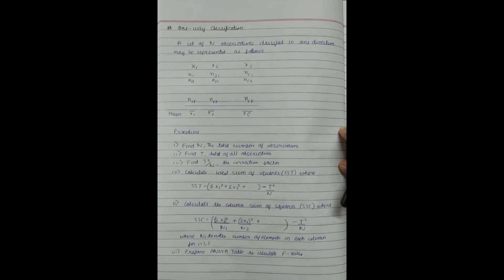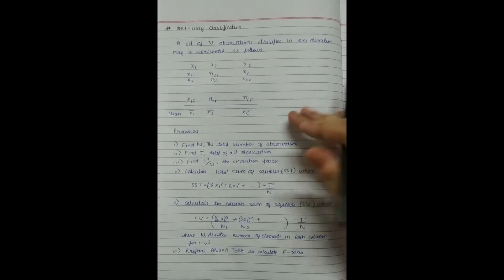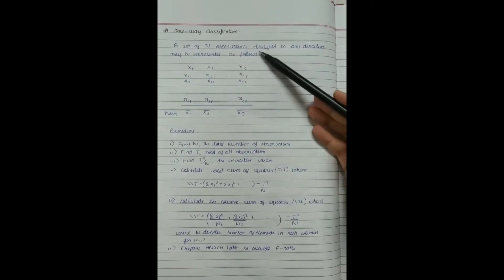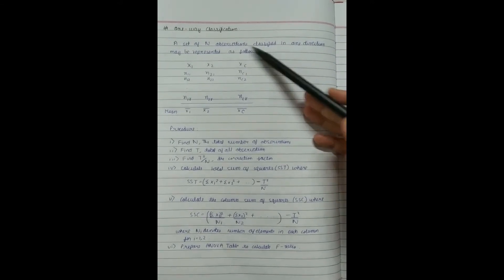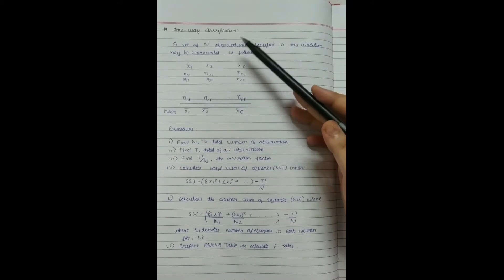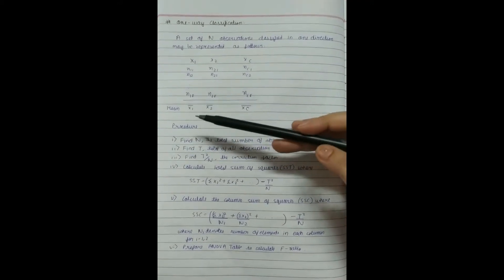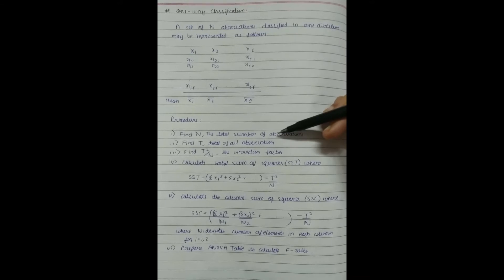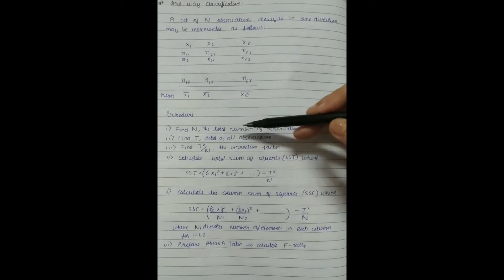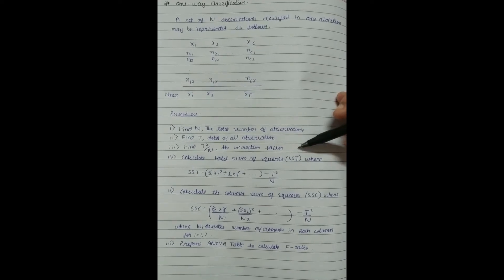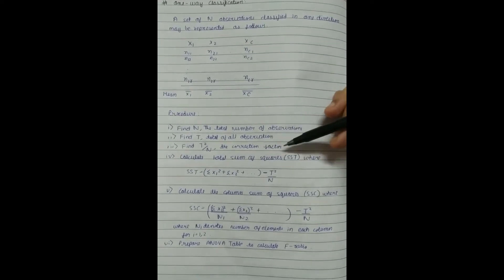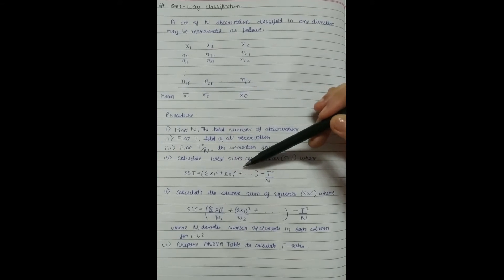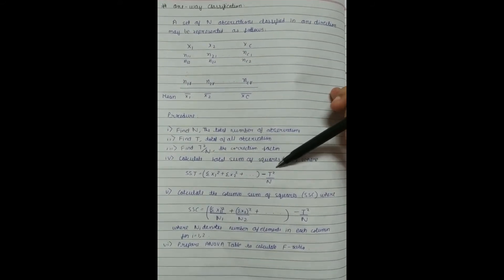Now let us study one-way classification of ANOVA in detail. A set of n observations classified in one direction may be represented as follows. The procedure begins with finding n, the total number of observations. Then we find T, the total of all observations, and compute T²/n, known as the correction factor. We then calculate the total sum of squares SST, which equals the summation of x₁² plus summation of x₂² and so on, minus T²/n.